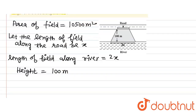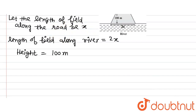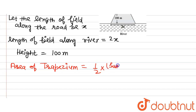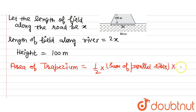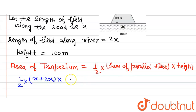Now we will use the formula of area of trapezium and solve for the value of x. The formula is: Area of trapezium = half multiplied by sum of parallel sides, multiplied by height. We can write it as: half multiplied by (x + 2x), multiplied by height 100 meters, equals area 10,500 square meters.